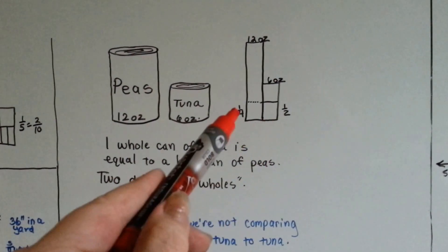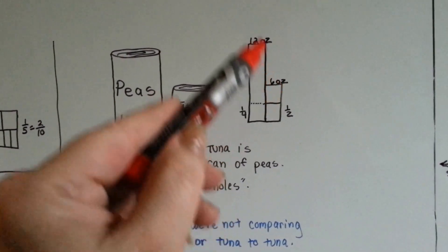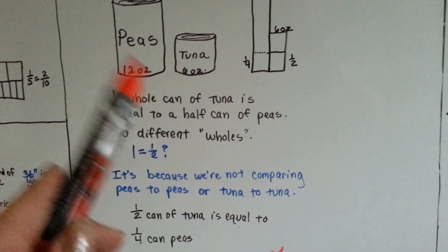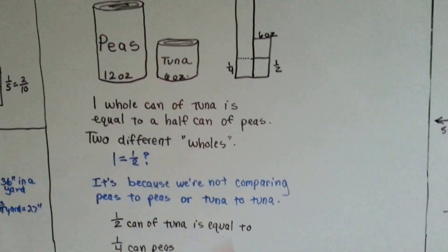How can a half be a fourth? Because they're two different size cans. We're not comparing peas to peas or tuna to tuna. We're comparing two different things.